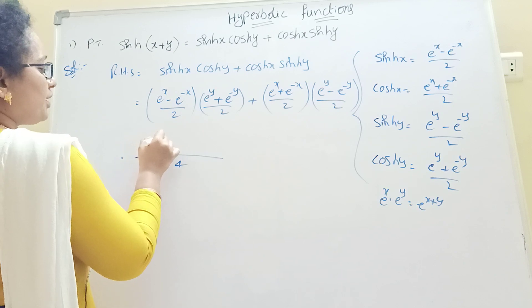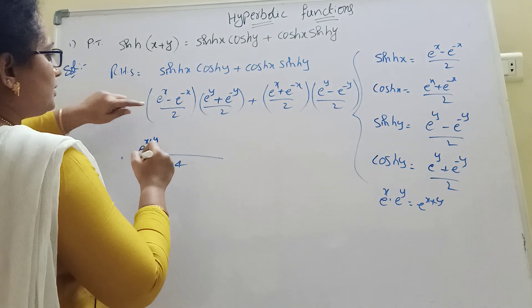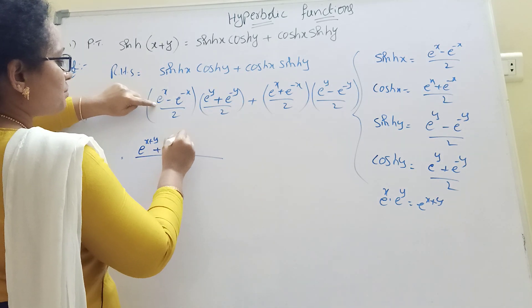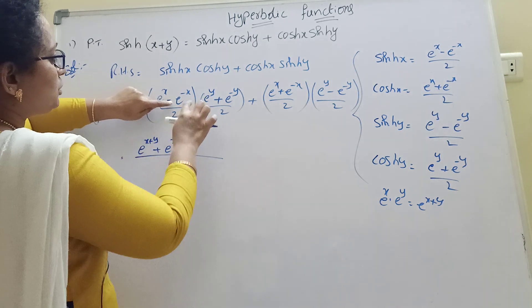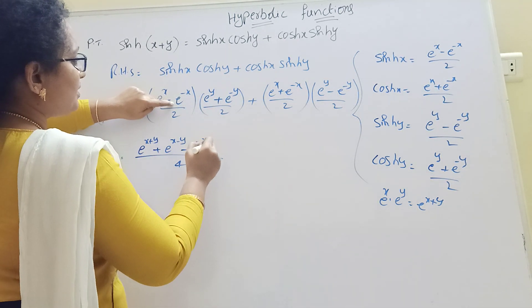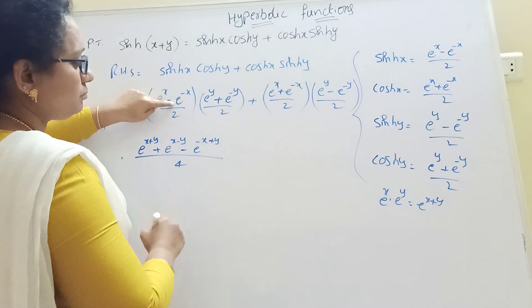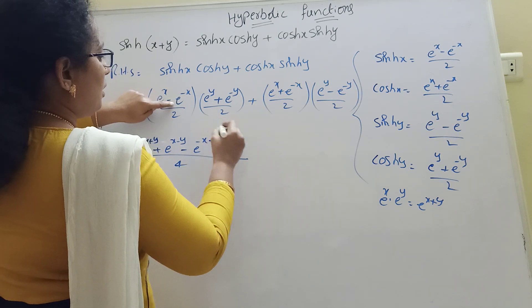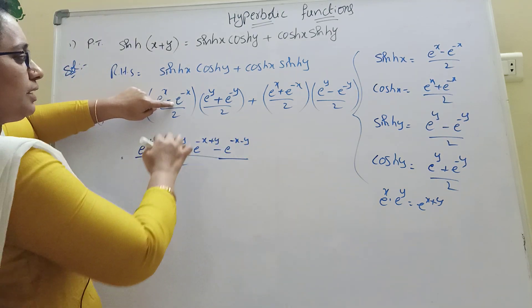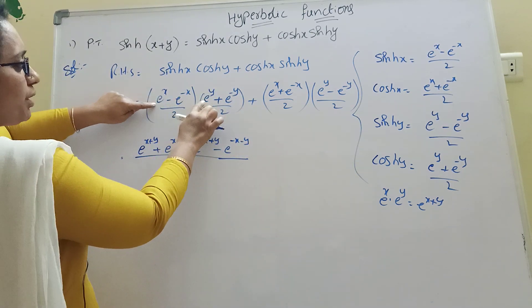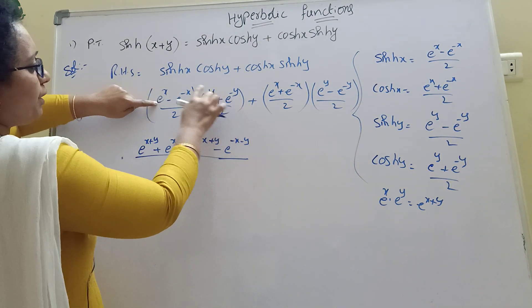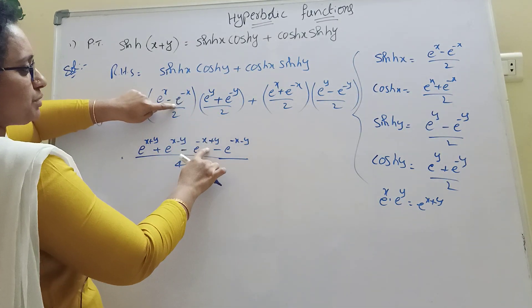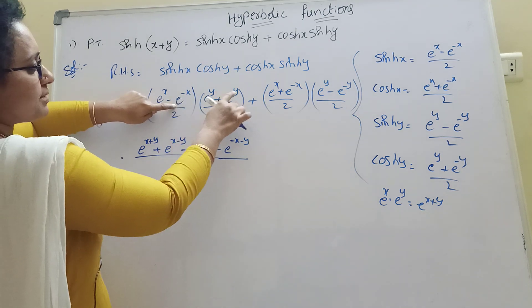Expanding: we get e^(x+y), plus e^(x-y), minus e^(-x+y), minus e^(-x-y), from the first product. Plus e^(x+y), minus e^(x-y), plus e^(-x+y), minus e^(-x-y) from the second product. All divided by 4.